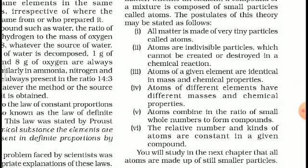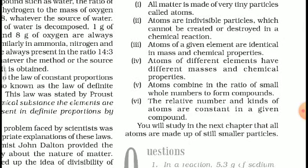Atoms of a given element are identical in mass and chemical properties. Atoms of different elements have different masses and chemical properties. Atoms combine in the ratio of small whole numbers to form compounds. The relative numbers and kinds of atoms are constant in a given compound.